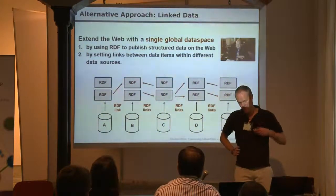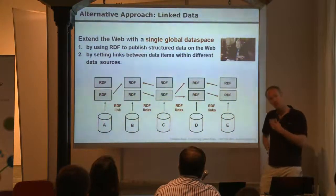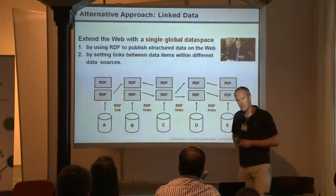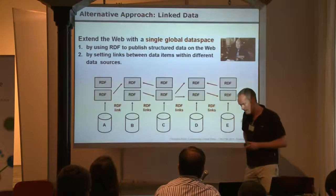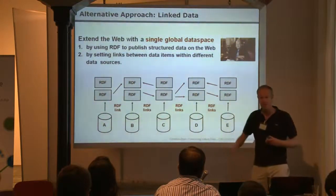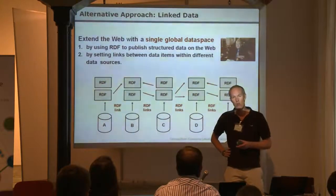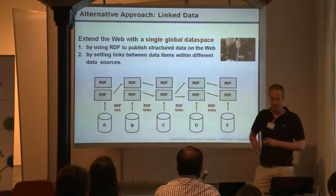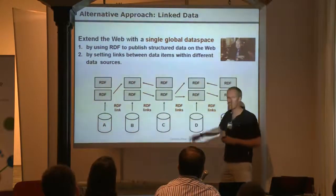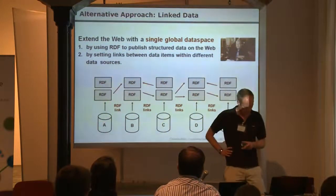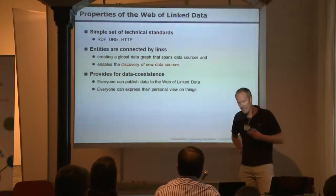As with the classic web, the idea is that as many data sources as possible agree on a common set of standards for exposing their data, and also that data sources set links pointing at other data sources. In the wild, many people publish their data as linked data following the best practices, but don't actually go through the effort of setting links to other data sources — which is not really what linked data is about. The idea of linked data is that you have links connecting the data sources so that all published linked data becomes part of one single global data space that can be used by applications.